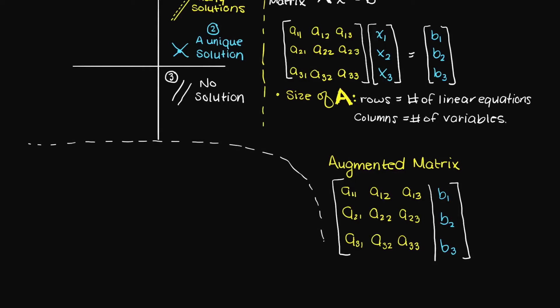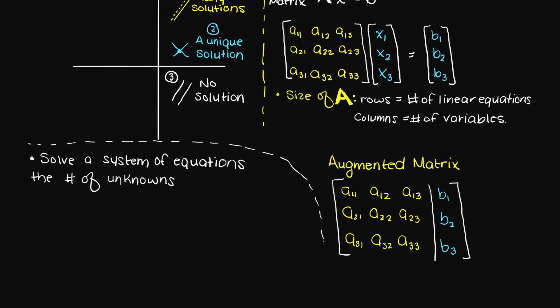An important thing to note is that to solve a system of linear equations, you must have at a minimum the number of unknowns equal to or less than the number of equations you have. If you have more unknowns than equations, you will not be able to solve the system.